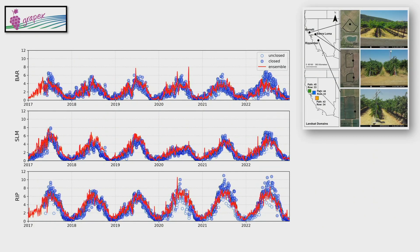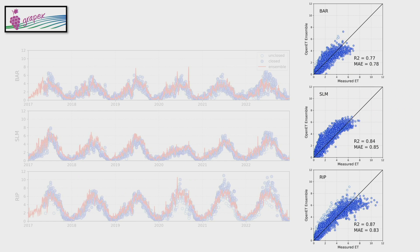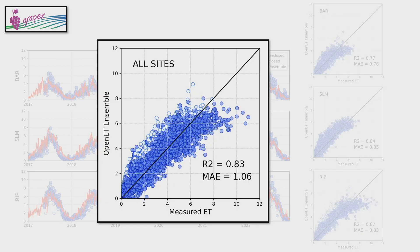Focusing on GRAPEX, it was the original project evaluating satellite-based ET in these agricultural systems. Looking at six years of data, we find really good correlations between the OpenET ensemble shown in red and observations in blue. Notably, after the 2019 season at Sierra Loma, they re-grafted their vines to a new varietal, and you can see that pulse in ET, but within a year it was back to normal. Overall, strong correlations and low mean absolute errors hovering around one millimeter per day, with ET estimates increasing from north to south within the Central Valley.